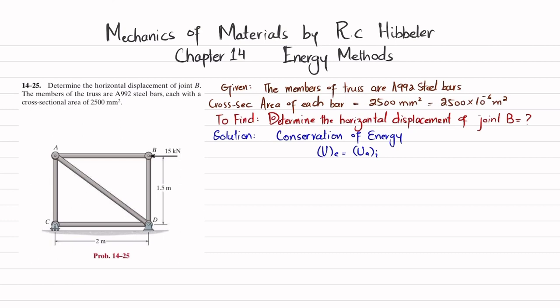The main basic equation is U_external = U_axial. To apply this, the first step is to find the forces in each member of the truss using the method of joints, because we need to know the axial load in each member to apply the strain energy due to axial loading.